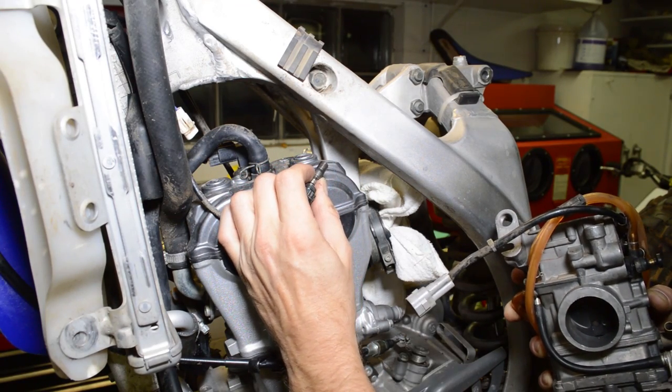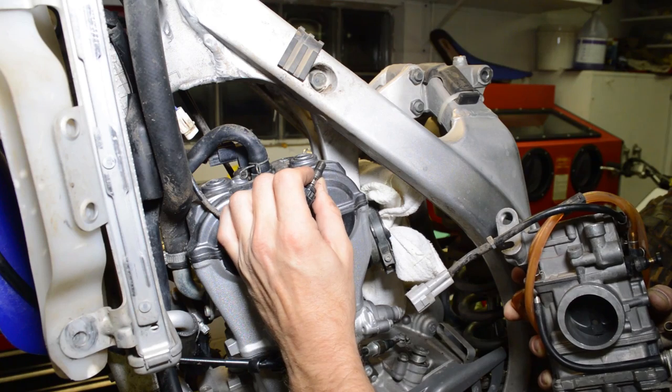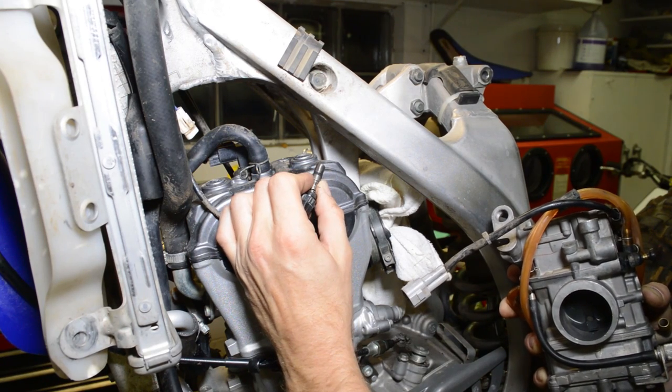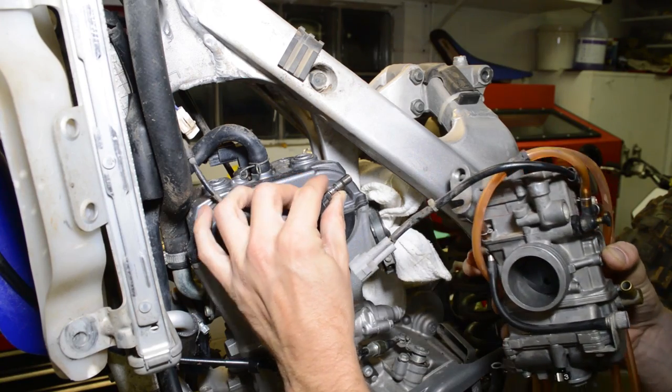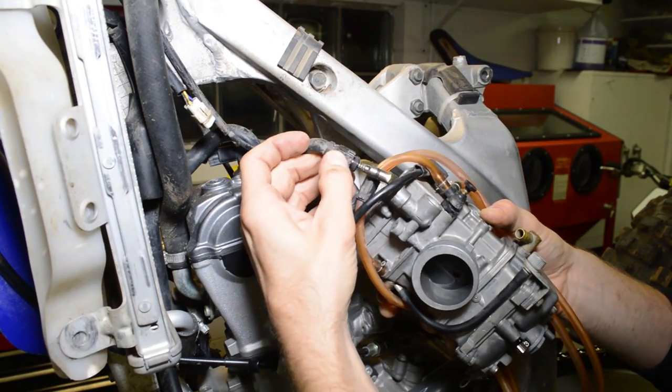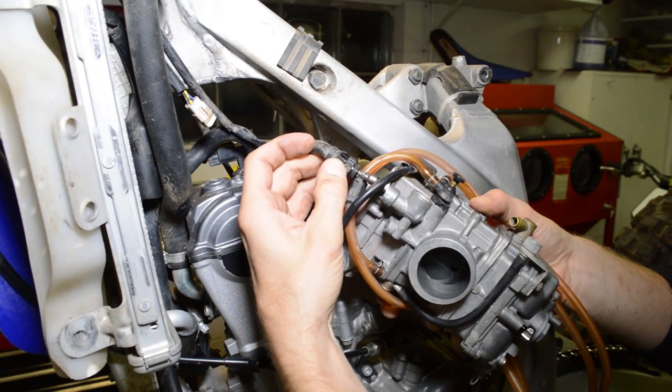It's a plunger that moves, exposes a port, and allows more air to get into the fuel-air mix, leaning it out. So this guy, like I said, is cable-operated. It sits in here in the top of the carb.